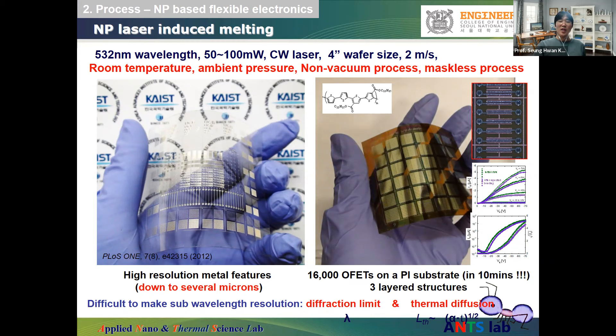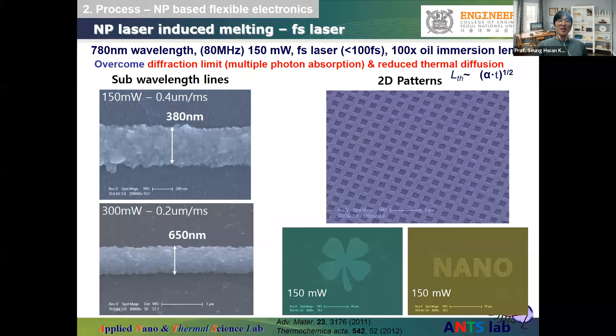The process can pattern a 4-inch wafer size sample in about 5 minutes at almost 2 meters per second scanning speed, without any vacuum environment. Metal patterning resolution is decided by diffraction and thermal diffusion, going down to several microns with a continuous wave laser. Using a femtosecond laser minimizes thermal damage and heat diffusion, reducing resolution further to 200–300 nanometers — comparable to e-beam lithography — but without any vacuum requirement.